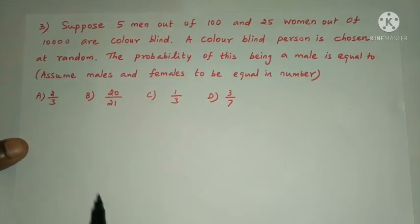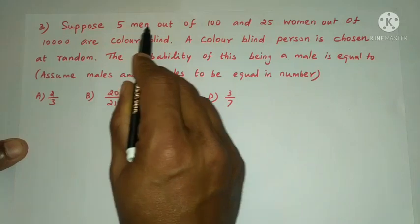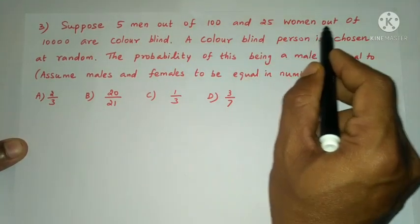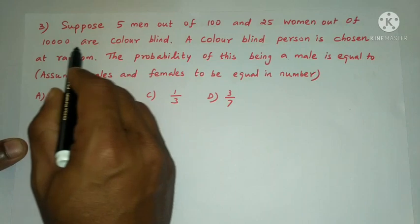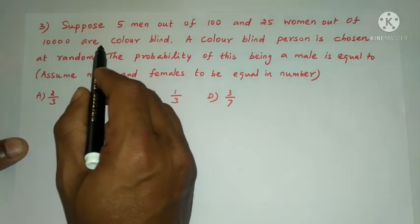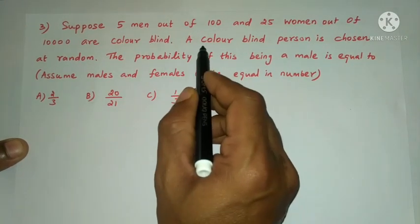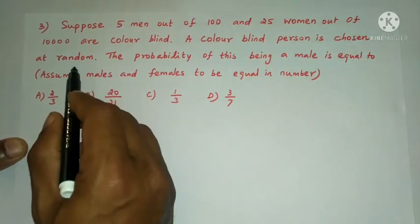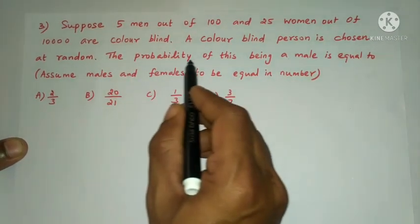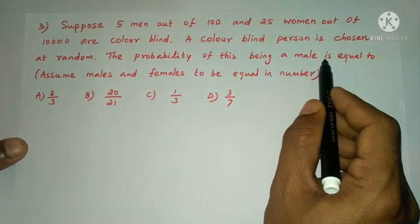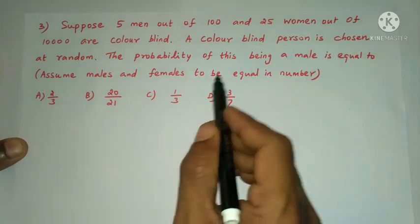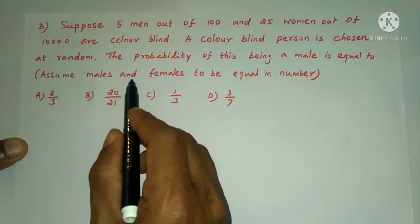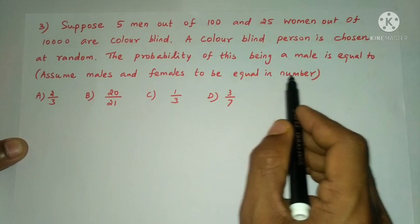Next question: suppose 5 men out of 100 and 25 women out of 10,000 are colorblind. A colorblind person is chosen at random. The probability of this person being male is equal to — assuming males and females to be equal in number.